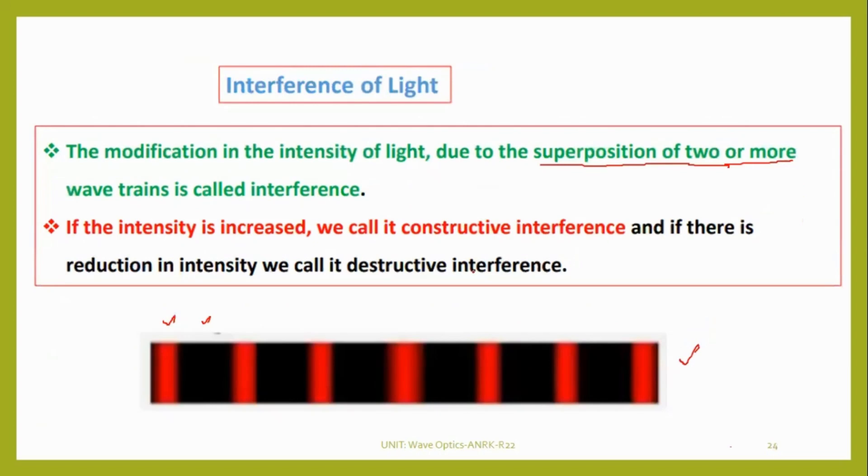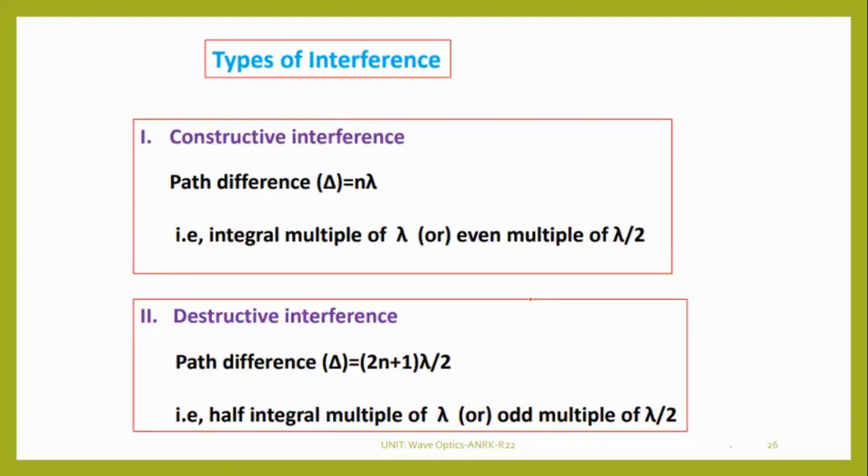The interference we told will take two types. One is constructive interference where we get maximum intensity, and destructive interference where we get minimum intensity. Where we will get constructive or destructive interference is decided by the path difference.